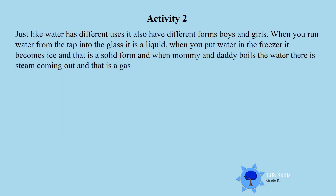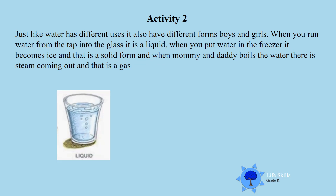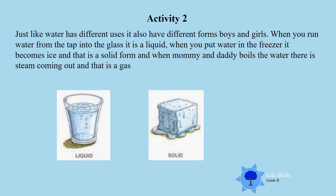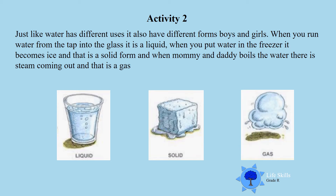Just like water has different uses, it also has different forms. You run water from the tap into a glass and we say that is a liquid. You can also take the water and put it in the freezer and then it becomes solid — it is an ice block. And when you boil water, you can see the steam coming out of the kettle and that we call a gas. So water can be a liquid, it can be solid in ice form, and it can be a gas in steam.